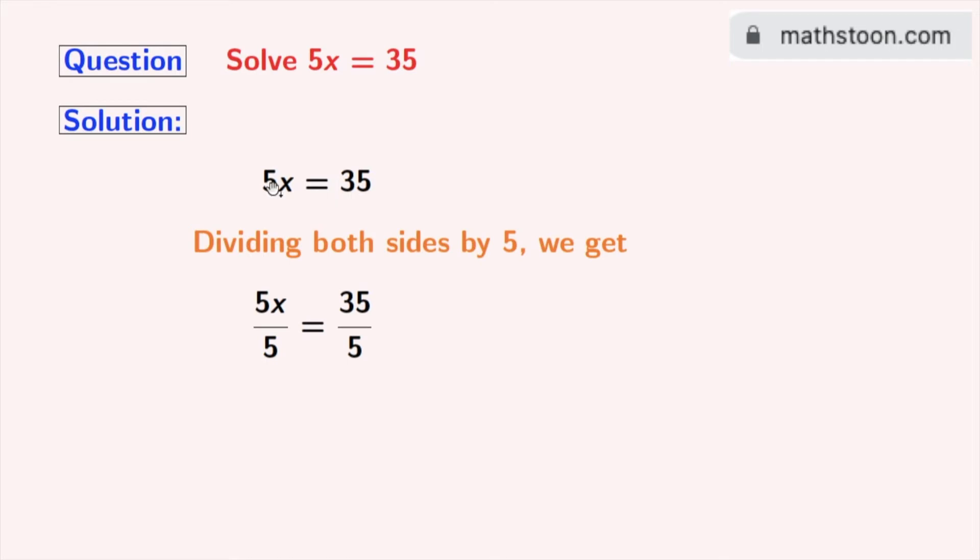we get 5x by 5 is equal to 35 by 5. See that in the left hand side, 5 gets cancelled and we are left with x.